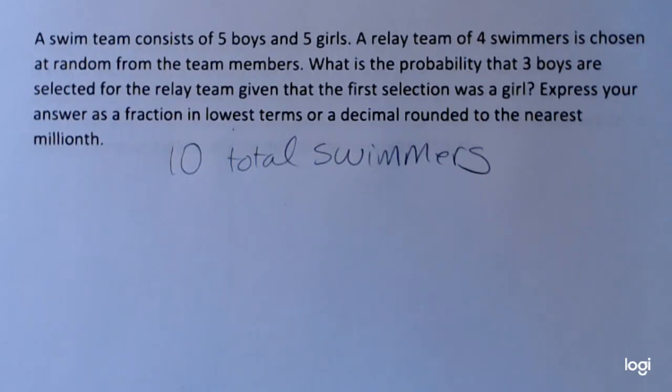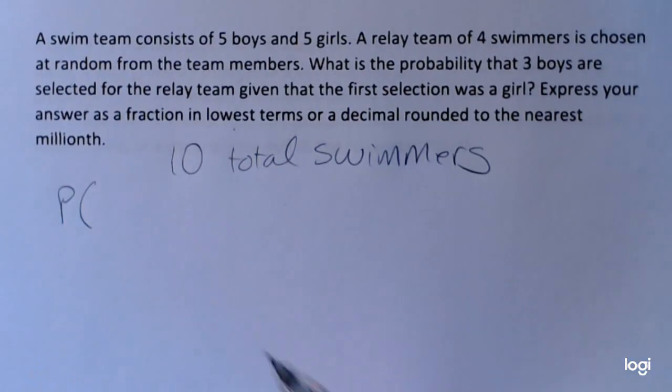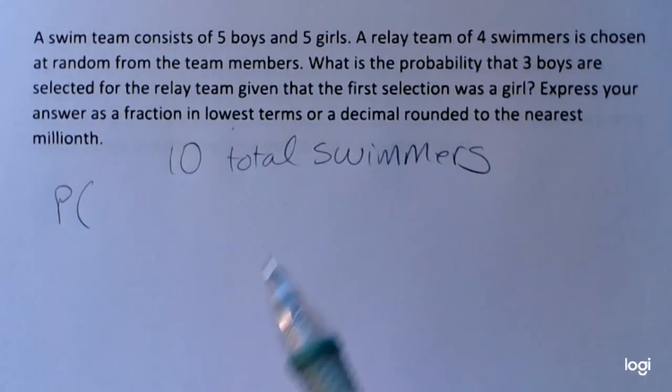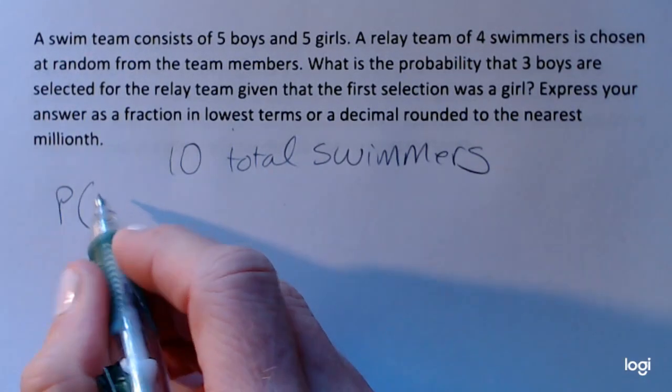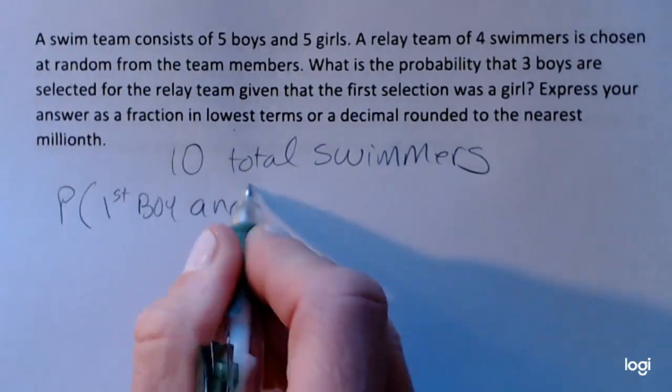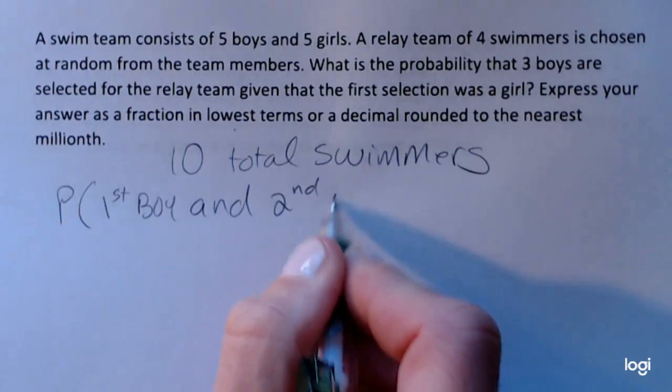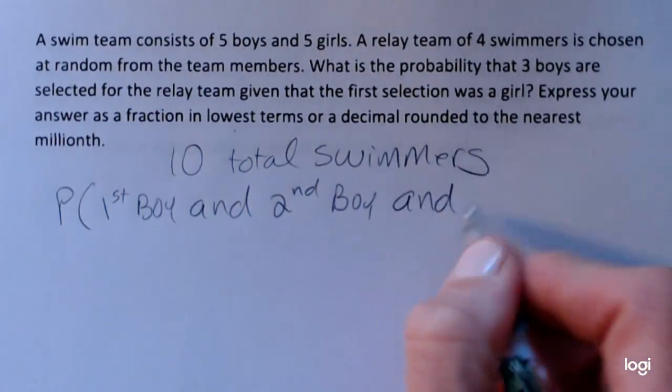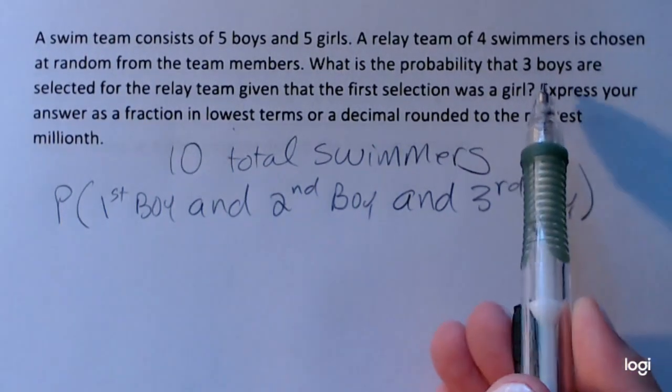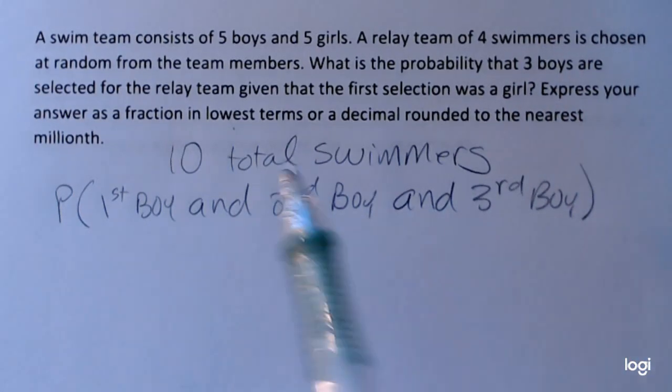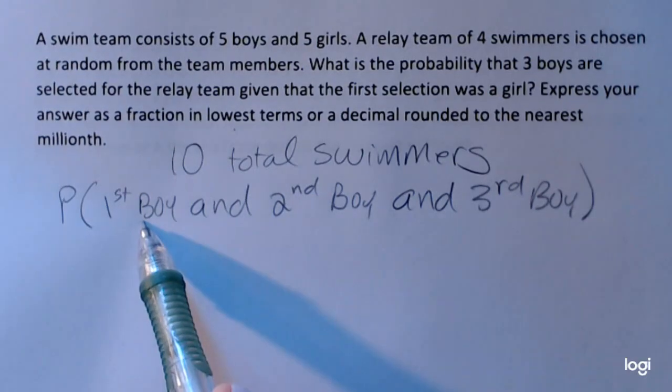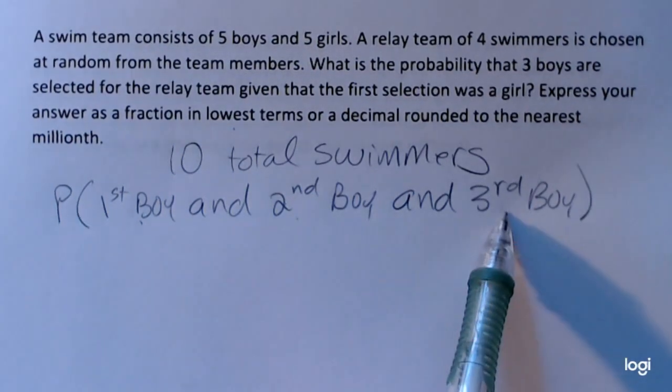So the overall structure for this is going to be the probability of three boys being selected. So the first selection is a boy, and the second is a boy, and third is a boy. So I've taken the statement three boys are selected and broke it down as the first boy, the first swimmer is a boy, and then the second, and then the third.